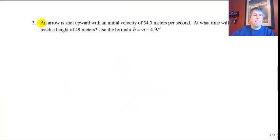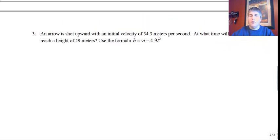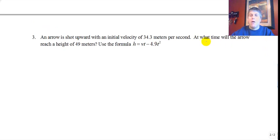Sample problem 3. An arrow is shot upward with an initial velocity of 34.3 meters per second. At what time will the arrow reach a height of 49 meters? Use the formula h equals v times t minus 4.9 t squared.